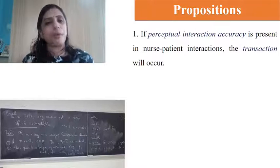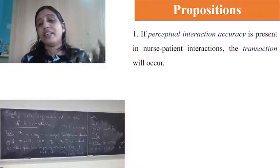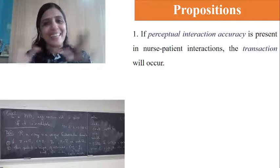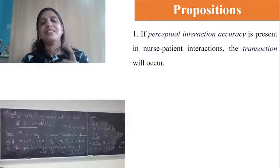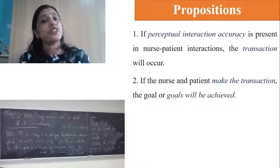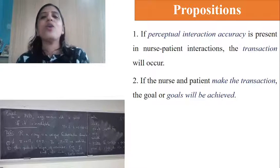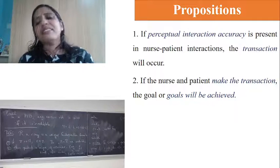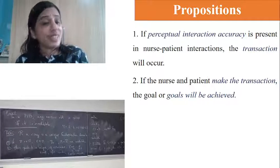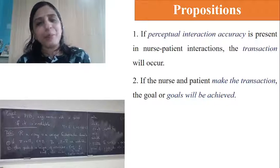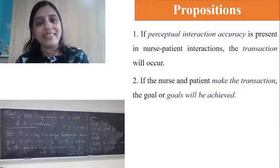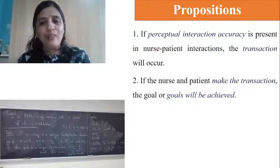The best part of King's propositions is everything starts with 'if.' First proposition: if perceptual accuracy is present, transaction will occur. Second: if the nurse and patient make transaction, then goals will be achieved. Third: if goals are attained, satisfaction will occur — for the teacher, student, nurse, and patient.